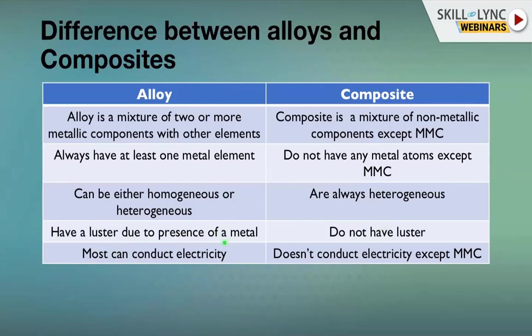Alloys can conduct electricity — invariably through metallic or ionic bonds. Composites normally don't conduct electricity, except for MMCs. MMCs conduct electricity because the matrix is metallic.